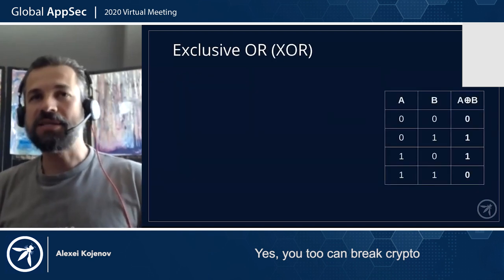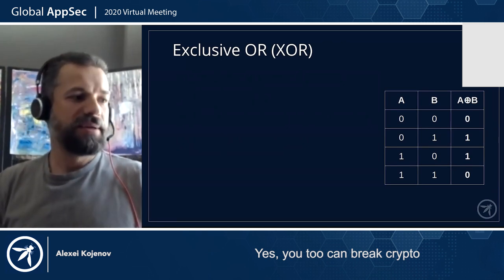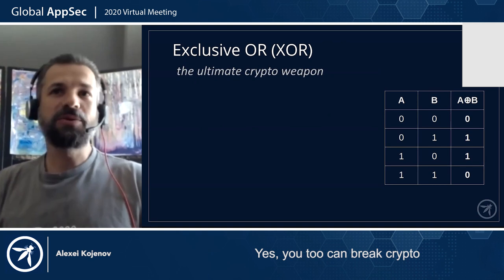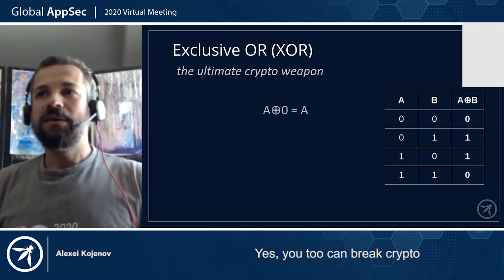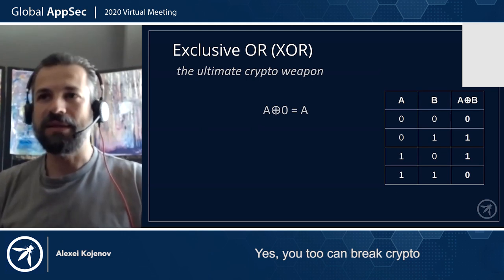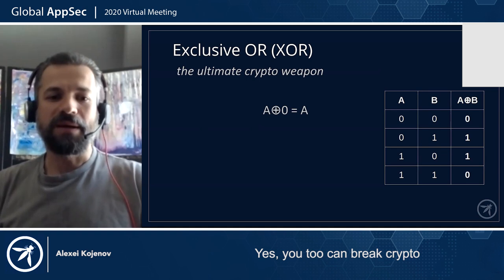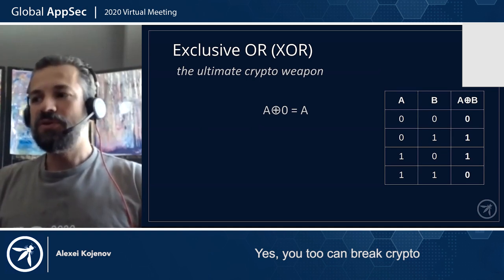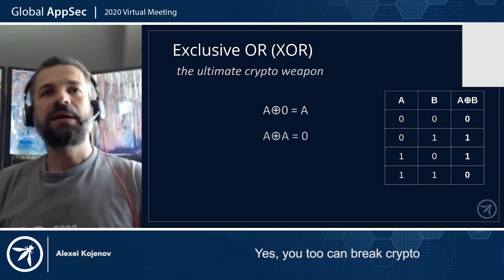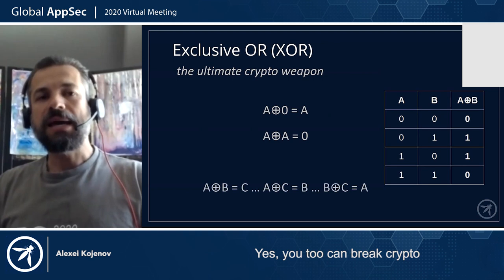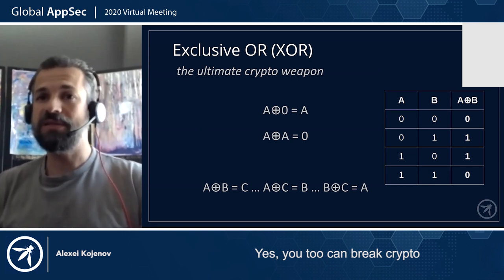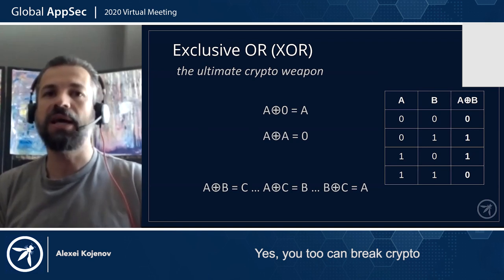This is the math for today: Exclusive OR, or XOR. This is the only mathematical operation I'm going to talk about today. I call it the ultimate crypto weapon, and you'll see why. XOR has a few interesting properties: anything XOR with zero is the same thing — it doesn't change. Anything XOR itself is zero. And if A XOR B equals C, then A XOR C equals B, and B XOR C equals A. That means you can move that operand to any side of the equation and it still holds true.